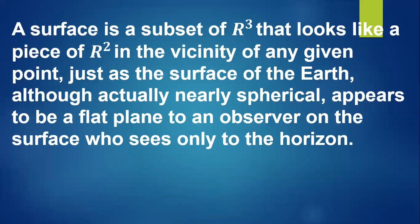More precisely, a surface is a subset of R³ (three-dimensional space) that looks like a piece of R² (two-dimensional space) in the vicinity of any given point — just as the surface of the earth, which is nearly spherical, appears to be a flat plane to an observer on the surface who sees only to the horizon.